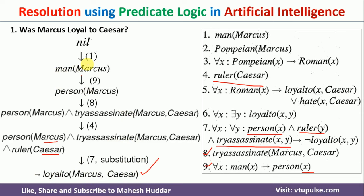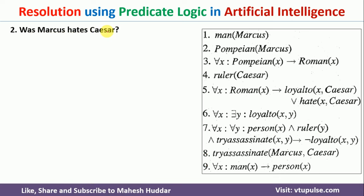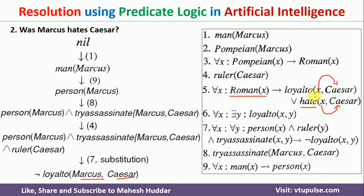Now we continue with the second question: does Marcus hate Caesar or not? To get the answer, check the 5th premise, which involves hate(x, Caesar). Looking at that premise: for all x, if x is a Roman, then either x is loyal to Caesar or x hates Caesar. If Marcus is Roman and we already proved that Marcus is not loyal to Caesar, then the only option left is that Marcus hates Caesar.